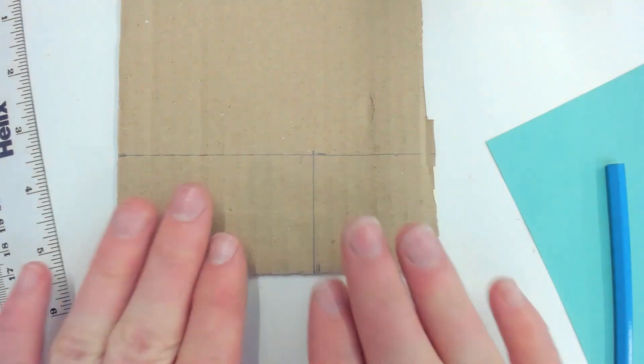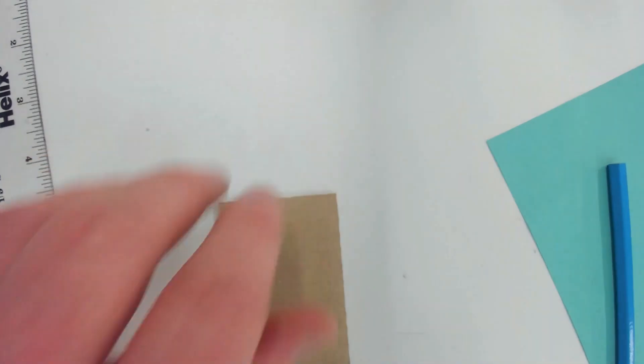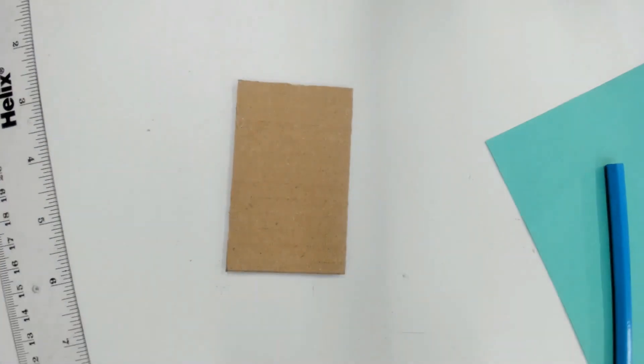And we're going to join those two lines together. That's about right. And you're going to quickly cut that out. I've made one here, saving the cutting, but obviously make sure it's nice and neat.